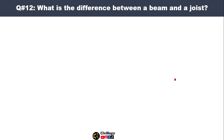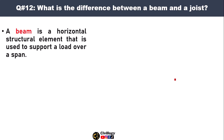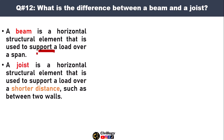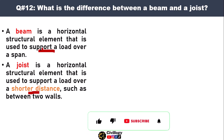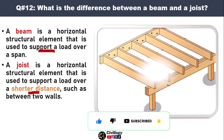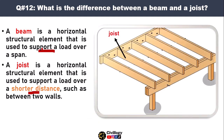Question number twelve: what is the difference between a beam and a joist? A beam is a horizontal structural element that is used to support a load over a span, whereas a joist is also a horizontal structural element that is used to support a load over a shorter distance. The main difference is that a beam covers larger distances and a joist covers shorter distances.